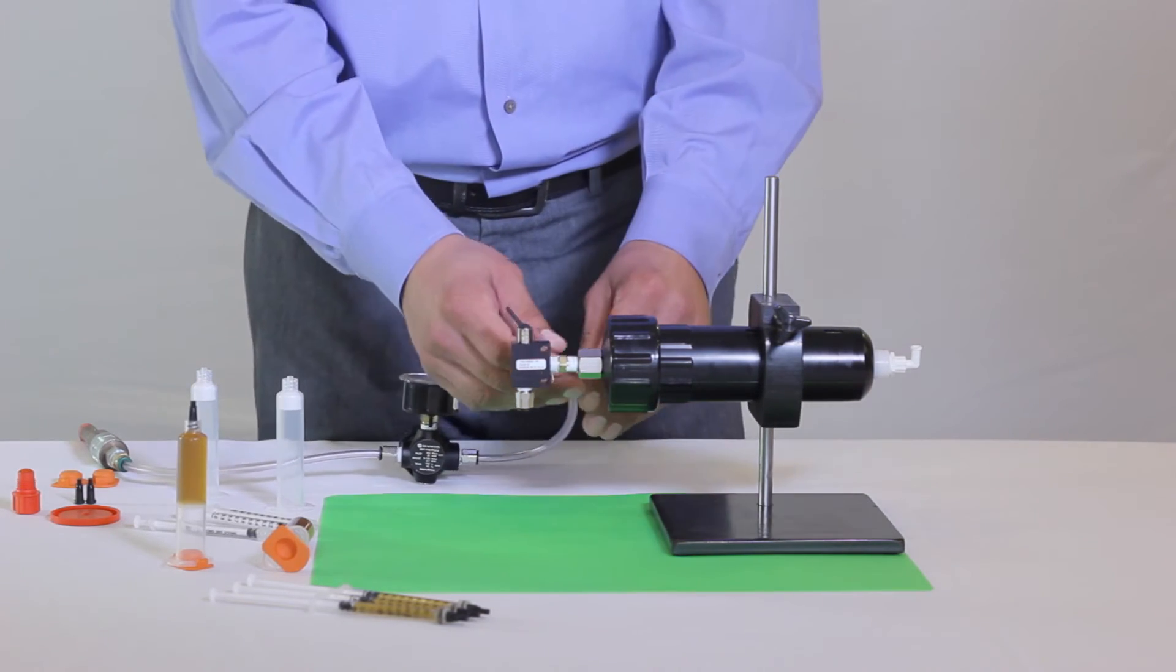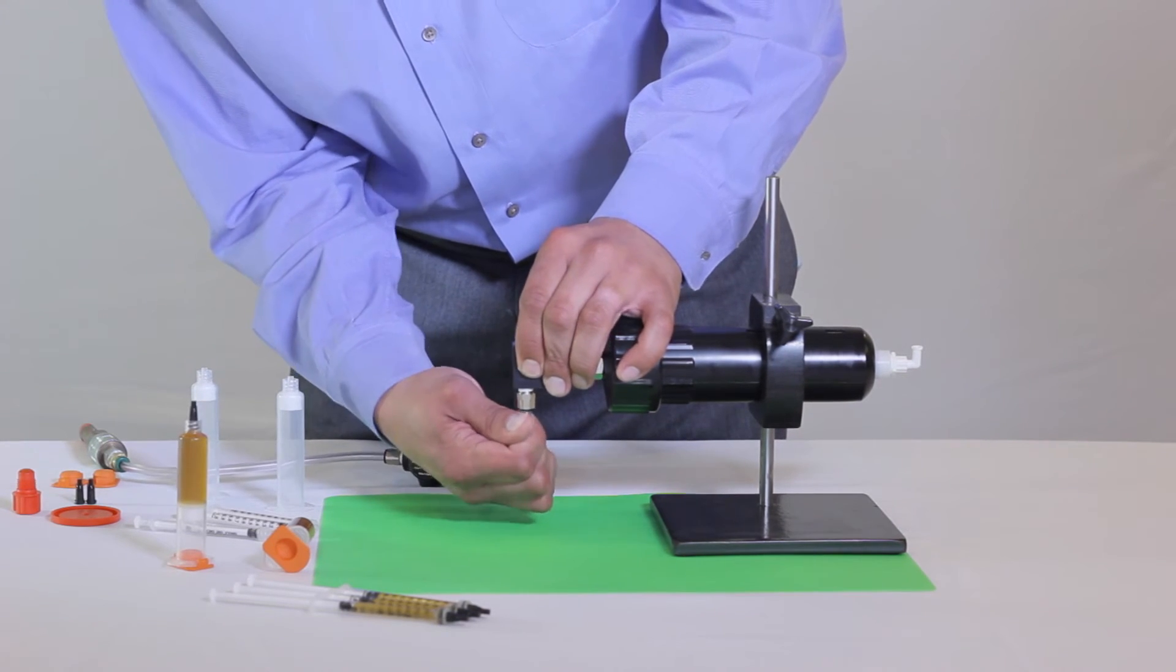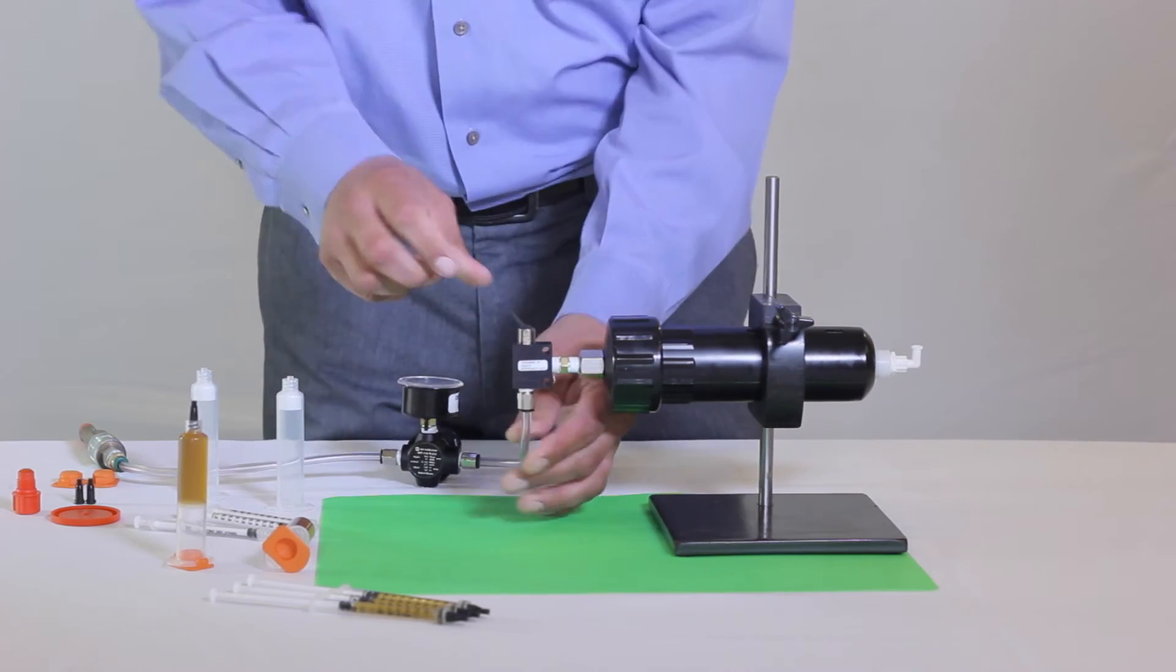Now attach the ¼ inch airline to the press-fit connector located here at the bottom of the toggle switch. Once that is securely fastened, adjust the regulator to 5 PSI.